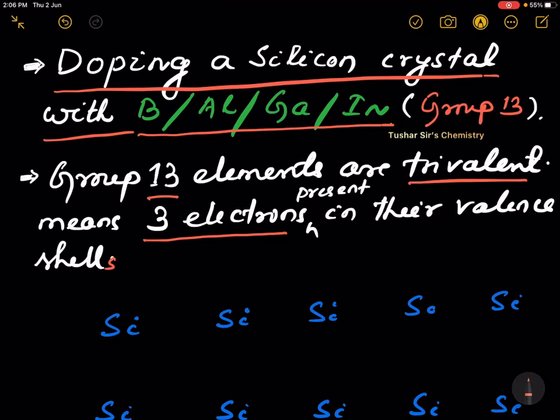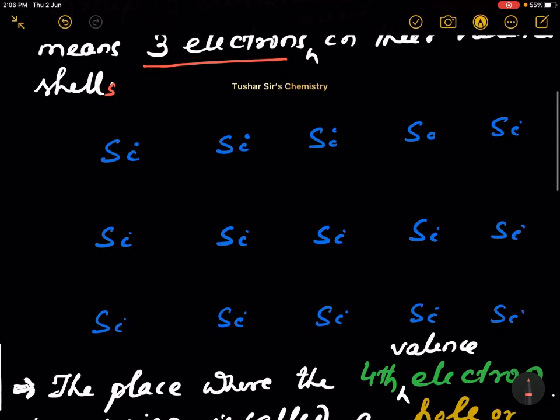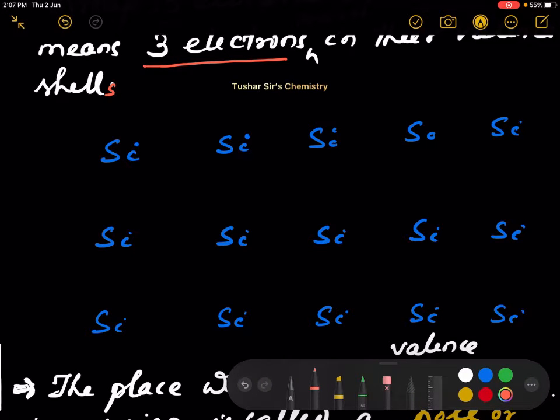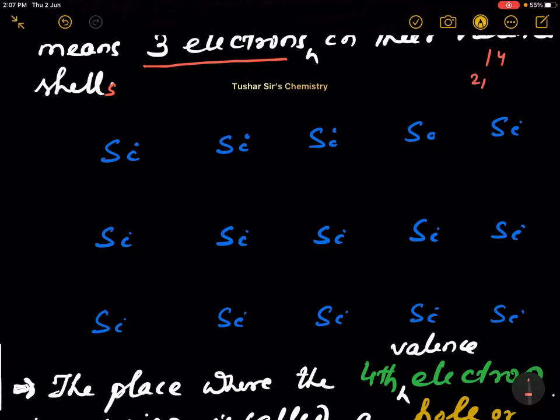You see, in silicon crystal, silicon has four valence electrons because its atomic number is 14, 2-8-4. So it has four valence electrons. So each silicon has four valence electrons.